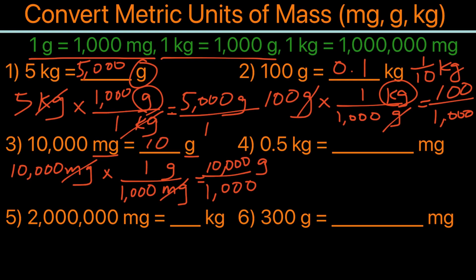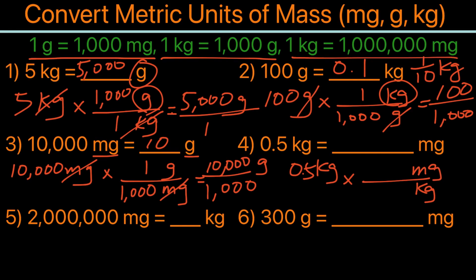For the fourth example, we have 0.5 kilograms converting to milligrams. Kilogram goes in the denominator and milligram in the numerator. Using the conversion 1 kilogram equals 1,000,000 milligrams, kilograms cancel out and we get 0.5 times 1,000,000, which is 500,000 milligrams.